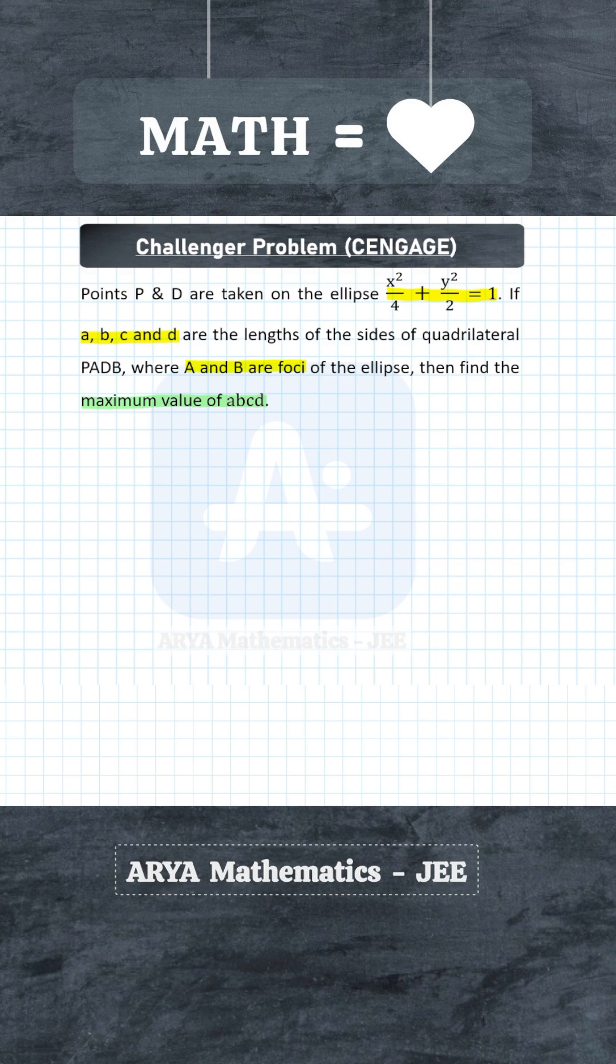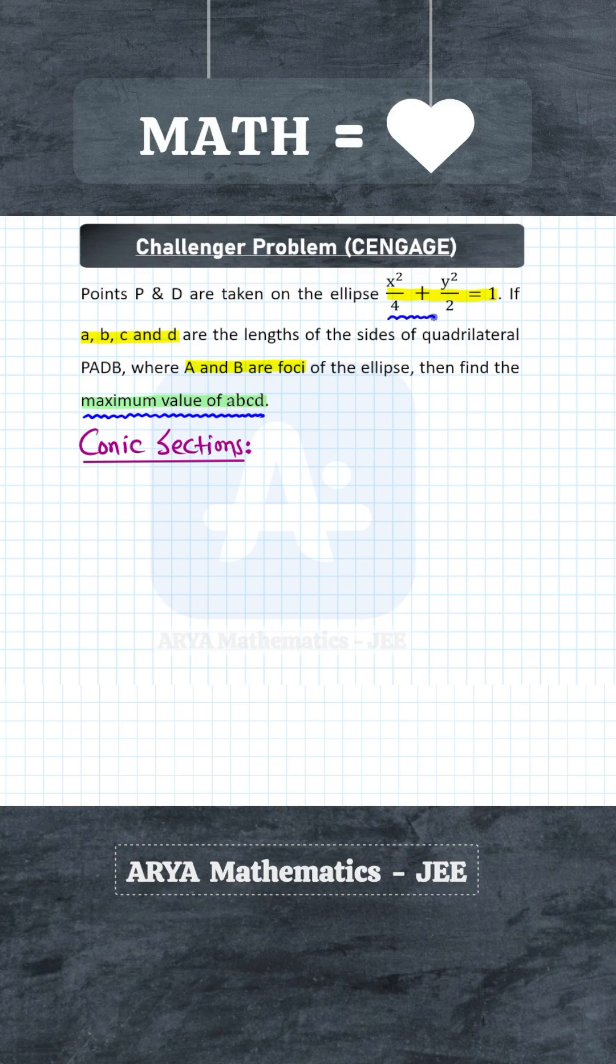Now this is a very interesting problem from conic sections. For the given ellipse, A square is more than B square, so this will be a horizontal ellipse. Inside this ellipse we are making a quadrilateral, and the two vertices of that quadrilateral are at the foci of the ellipse and the remaining two vertices are on the ellipse.